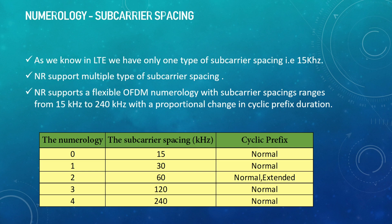For numerology 2, it is 2 to the power 2, that is 4 into 15, giving 60 kilohertz. For numerology 3, it is 2 to the power 3, that is 8 into 15, giving 120 kilohertz. Likewise, we can calculate for numerology 4 as well to find the subcarrier spacing.